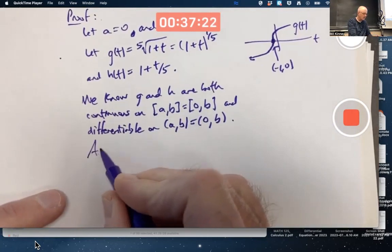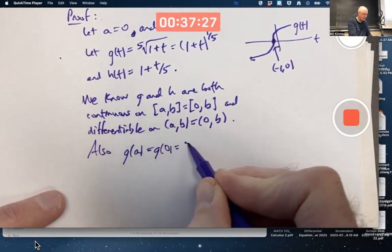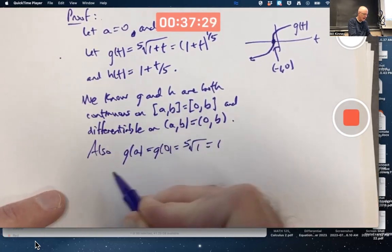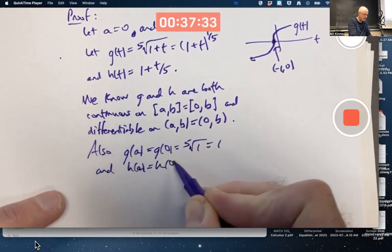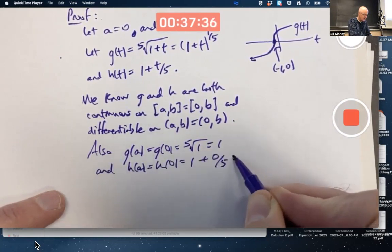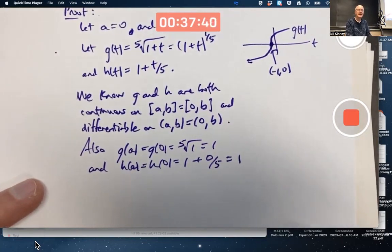Also, g(a) which is g(0) equals the fifth root of one, which is one, and h(a) equals h(0) equals 1 + 0/5, which is also one. These horses are starting at the same place at the same time.